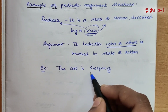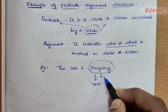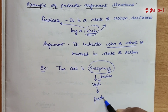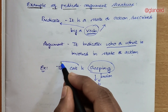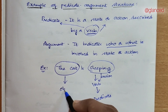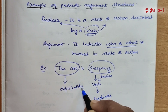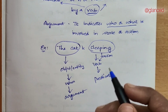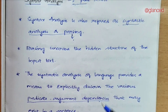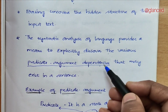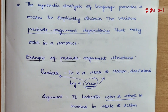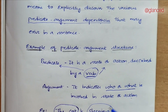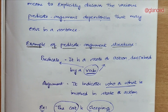For example: 'The cat is sleeping.' Here 'sleeping' is a verb — it is an action — so it is a predicate. 'The cat' is an object or entity, so it comes under noun and is the argument. Syntax analysis finds out the predicate-argument dependencies in a sentence, which helps to find the relationship between the words.